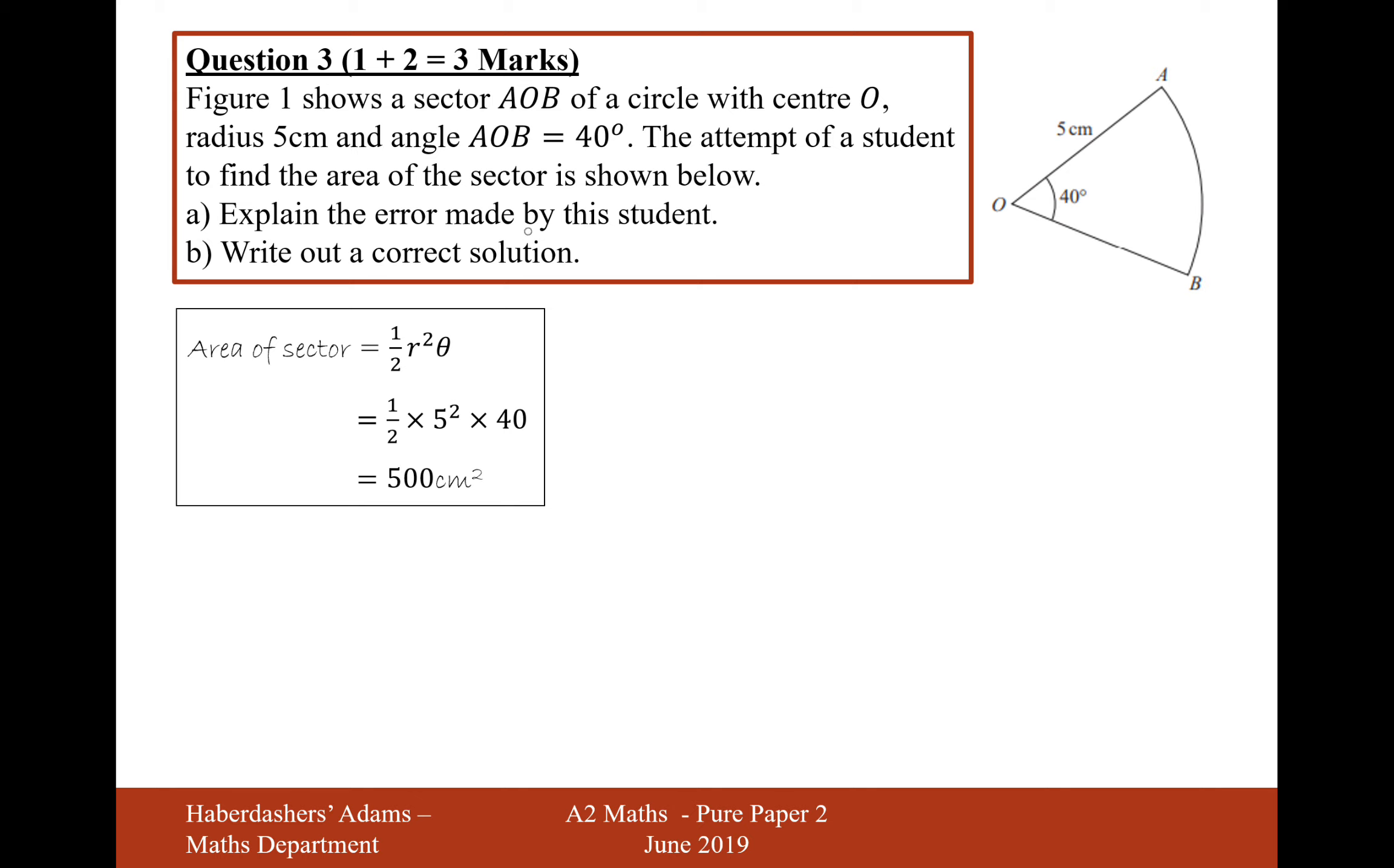Explain the error the student has made. So it goes half R squared theta, perfect. Half times 5 squared times 40 equals 500 centimeters squared. Well, the error that was made here was in this line, because theta needs to be in radians.